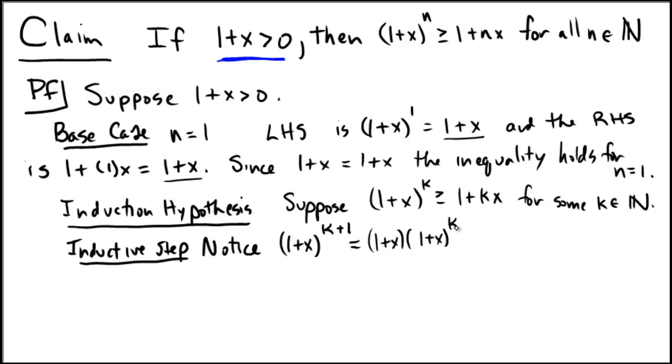Because now I can call upon my inductive hypothesis and say this is bigger than or equal to 1 plus x, which I'll keep the same, and 1 plus kx, which is coming from the induction hypothesis. If we distribute now, this is equal to 1 plus kx plus x plus a kx squared.